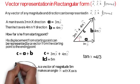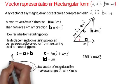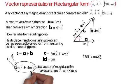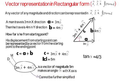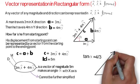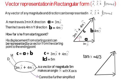This whole term, 3m î + 4m ĵ, is a new vector with magnitude 5 meters and a direction making angle alpha with the x-axis. This term cannot be further simplified. It is the vector sum of 3m î, which is in the x direction with magnitude 3, and 4m ĵ, which is in the y direction with magnitude 4. To represent this vector, we first walk 3 meters in the x direction, then 4 meters in the y direction. The plus symbol here is a vector addition symbol.